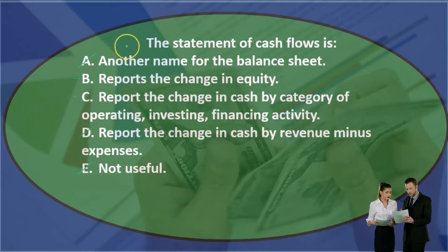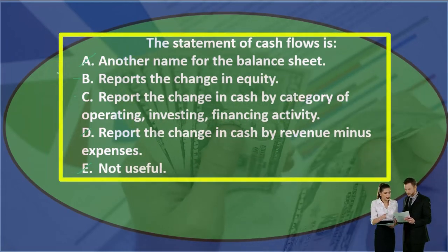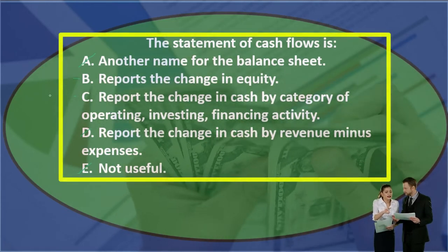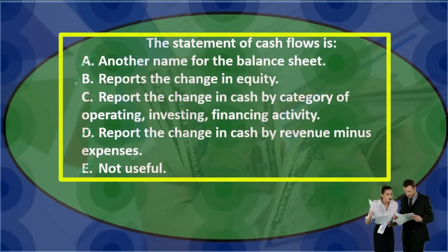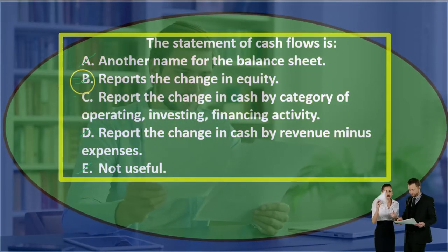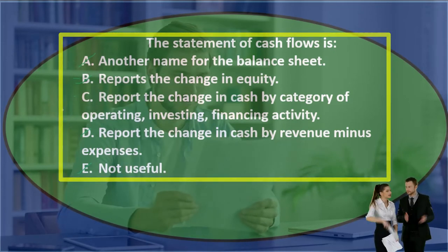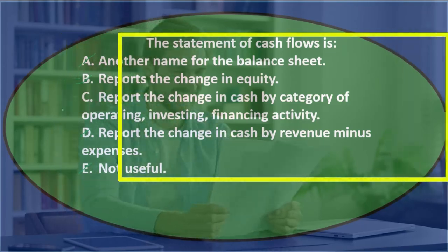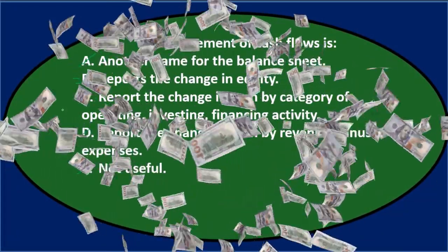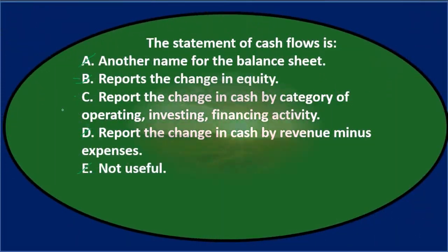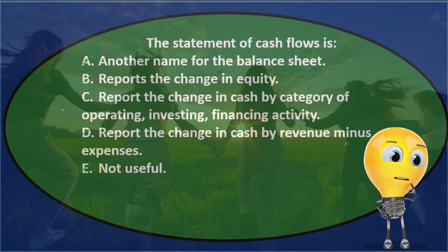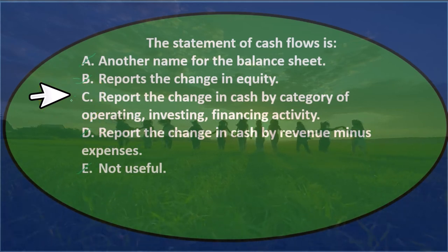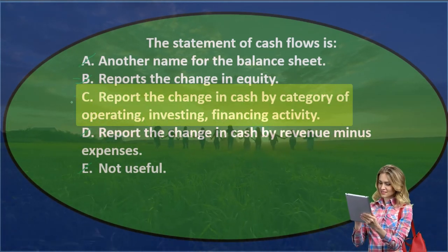So we're left with B and C. B reports change in equity — that's going to be the statement of owner's equity or stockholders' equity, so it's not that. The answer is C. Note: oftentimes when an answer is longer, it's because it's trying to be more specific and eliminate any possibility of being wrong. So if we see a longer answer and have no other idea, that might be the correct one. In any case, the answer is C: the statement of cash flows reports the change in cash by category of operating, investing, and financing activities.